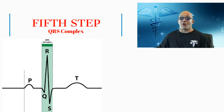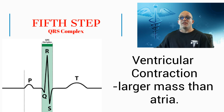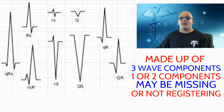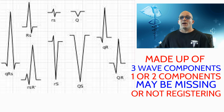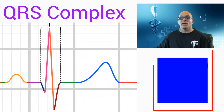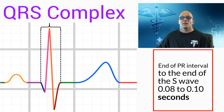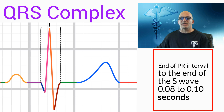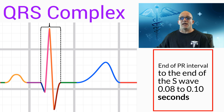The fifth step of our assessment brings us to the QRS complex, which indicates ventricular depolarization or contraction. The ventricles have a larger mass than the atria, which explains why the QRS complex is much larger than the P wave. It is important to know that the QRS complex is made up of three wave components and that one or two of the components — referring to the Q and the S — may be missing or not registering on the tracing, and that is considered to be normal. To assess the QRS complex, we must measure from the end of the PR interval to the end of the S wave. Normally, this interval is 0.08 to 0.10 seconds. We must also note the consistency and regularity of this complex in our assessment.